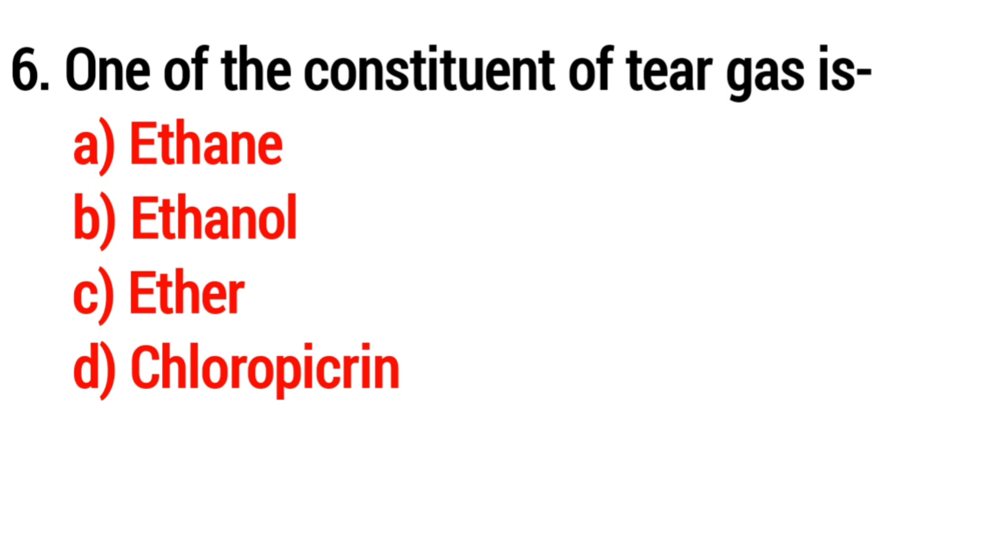Question 6: One of the constituents of tear gas is? Answer: Option D: chloropicrin.